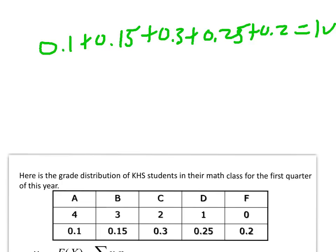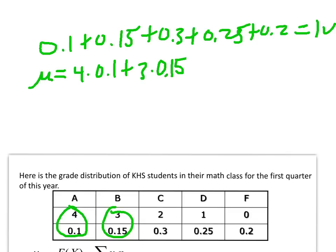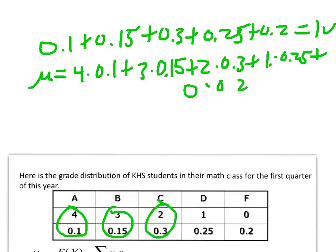To calculate the mean of this probability distribution, we multiply each value by its corresponding probability: 4 times 0.1, plus 3 times 0.15, plus 2 times 0.3, plus 1 times 0.25, plus 0 times 0.2. The mean comes out to be 1.7, which is the average grade — just a little bit below a C.